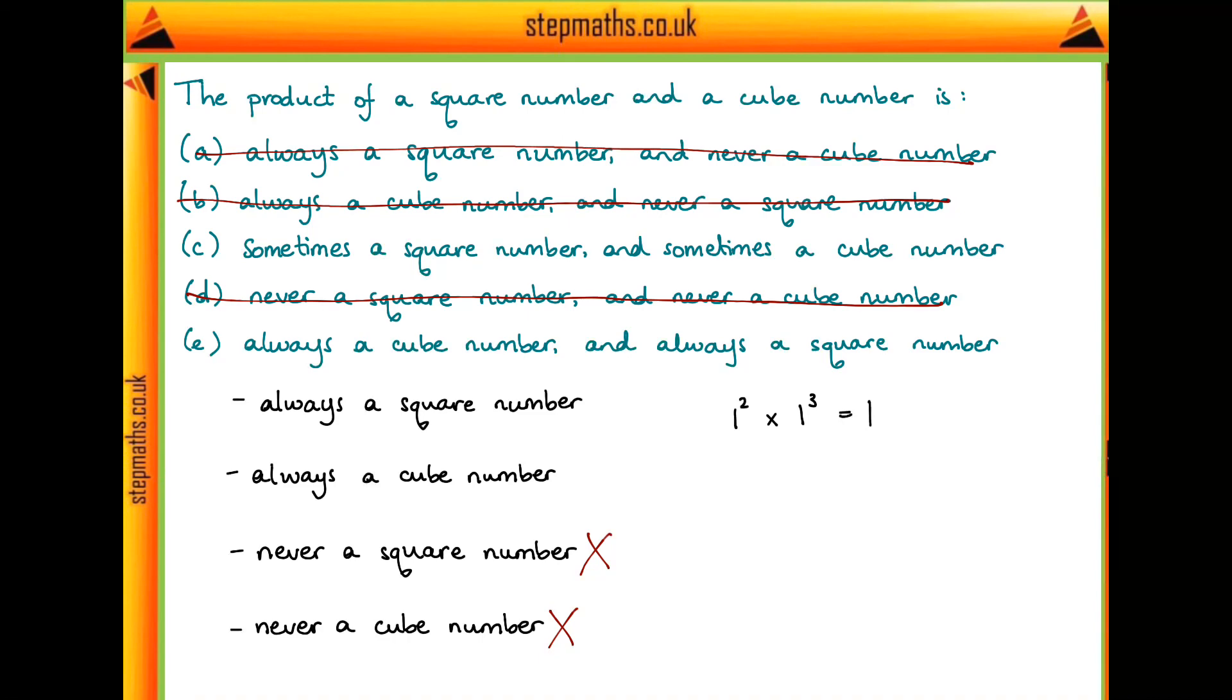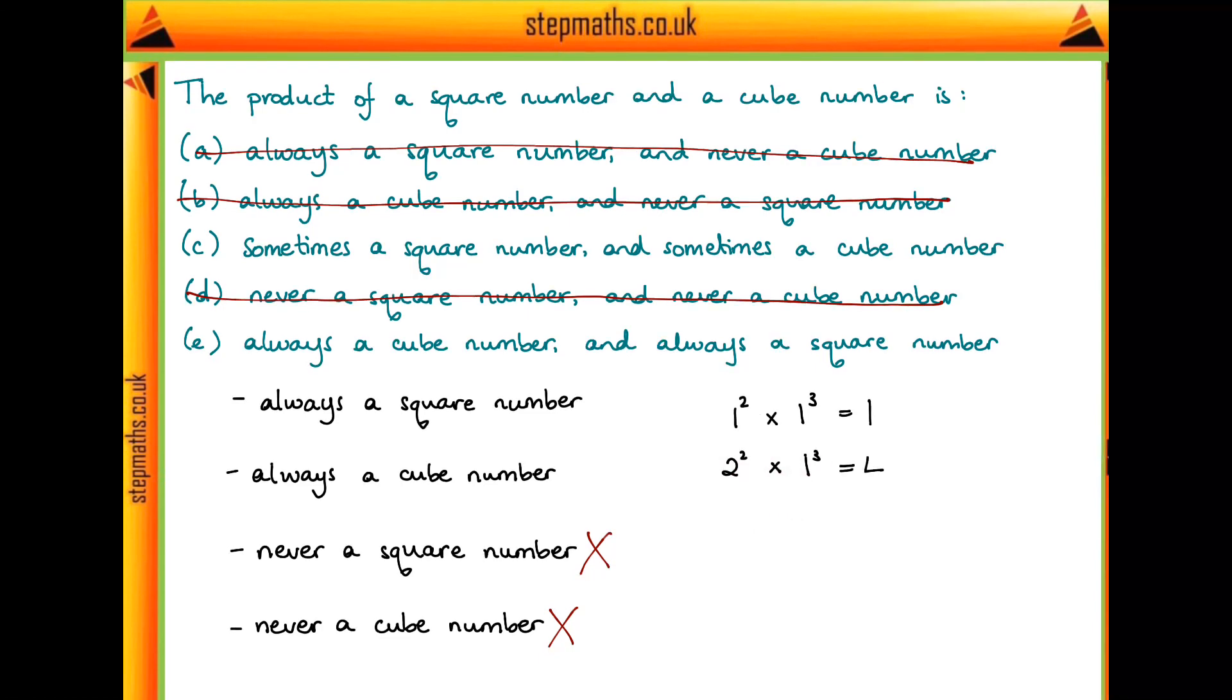Can we think of an example where the product isn't a square number or isn't a cube number? Well we still want to keep things simple but we can't have both ones, so let's try 2 and 1 instead: 2² × 1³. Now that's going to be equal to 4. Is 4 a square number? Yes. But is 4 a cube number? No.